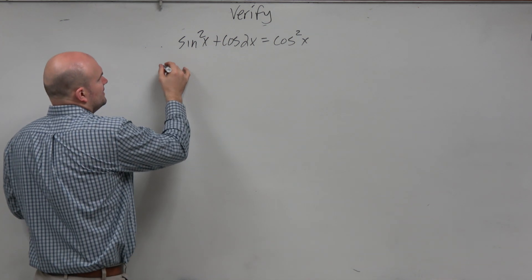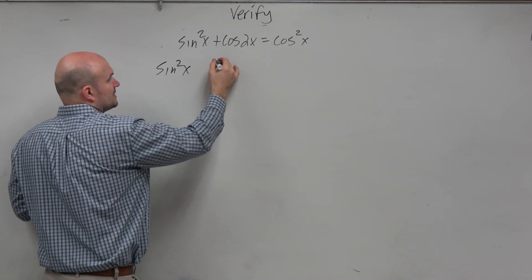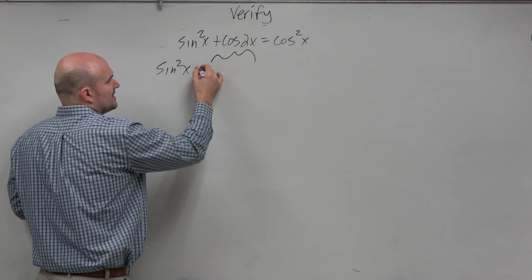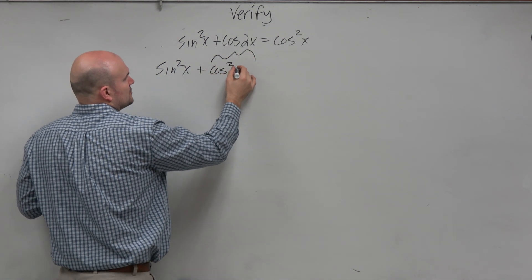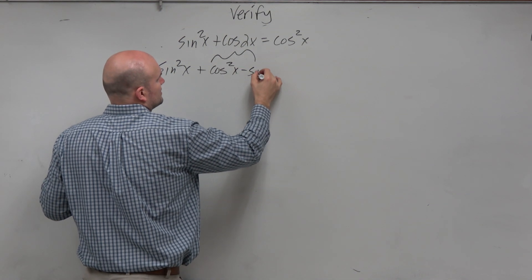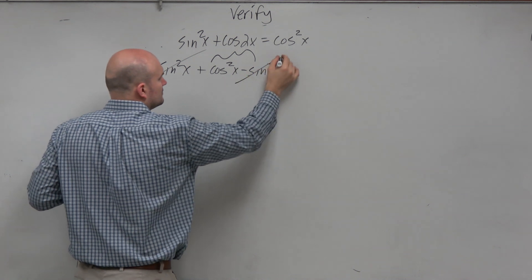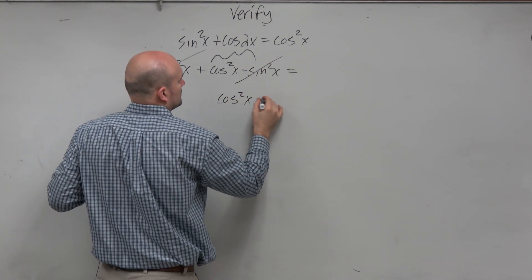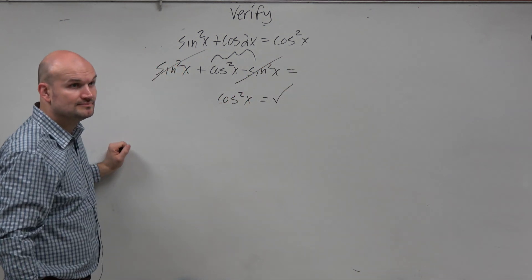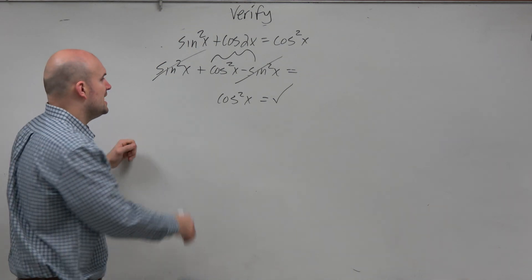I'll do the first one, and we'll see what that one looks like. So that's going to be plus cosine squared of x minus sine squared of x. And what do you know? Done. Right?